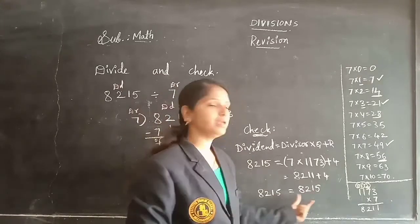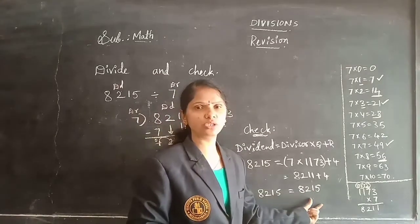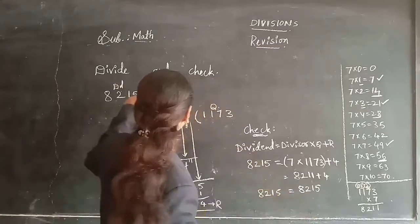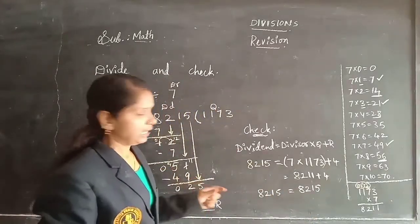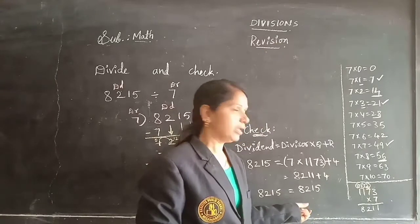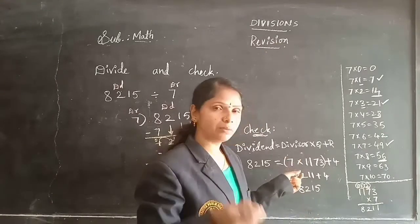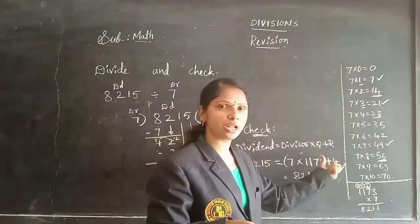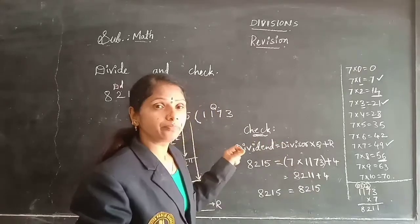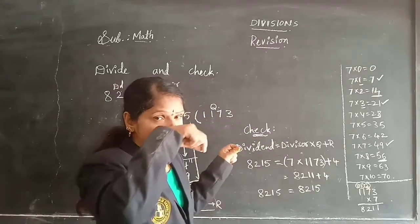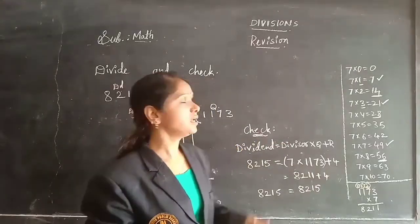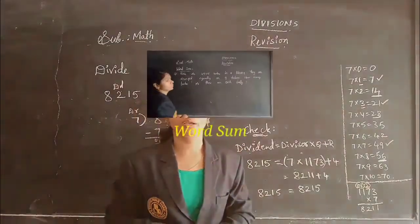The final answer 8,215 equals the dividend 8,215 — both answers are equal. If these two are equal, the division is correct. If you get different numbers, maybe you made a mistake in the multiplication, addition, or division. This is divide and check.